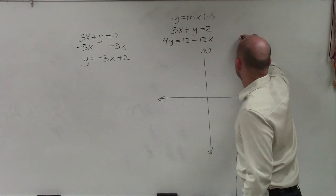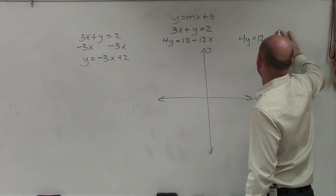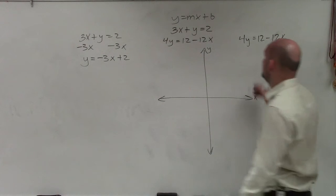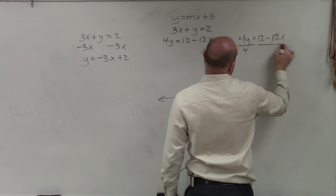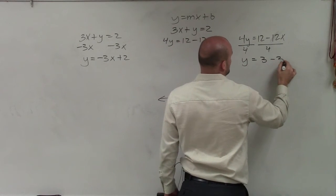Then let's go ahead and work over here. Over here I have 4y equals 12 minus 12x. So now we need to isolate our variable. Here I'm just going to have to divide by 4. So I have y equals 3 minus 3x.